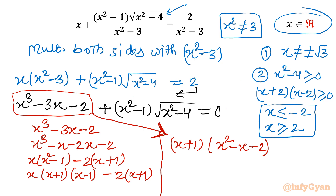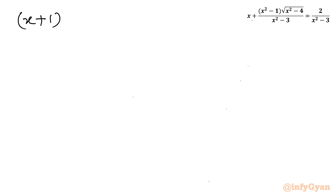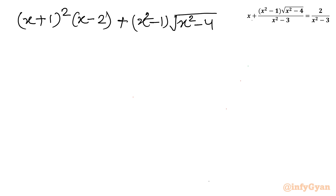Further, x² - x - 2 factors as (x+1)(x-2), so the cubic expression becomes (x+1)²(x-2). Replacing x³ - 3x - 2 with this factorization, our equation becomes: (x+1)²(x-2) + (x² - 1)·√(x² - 4) = 0.